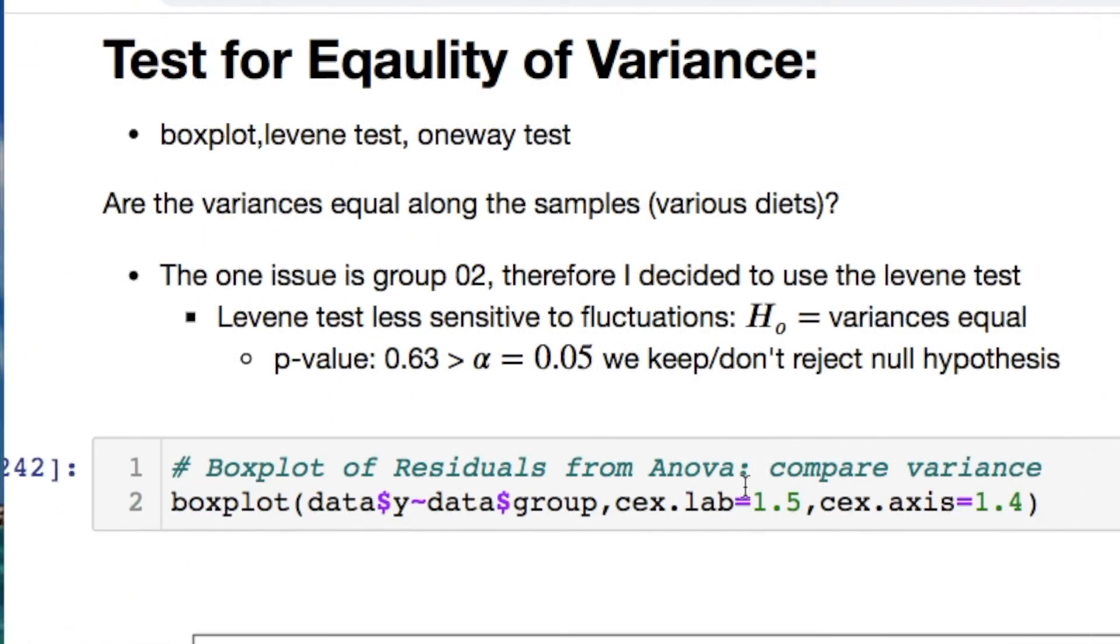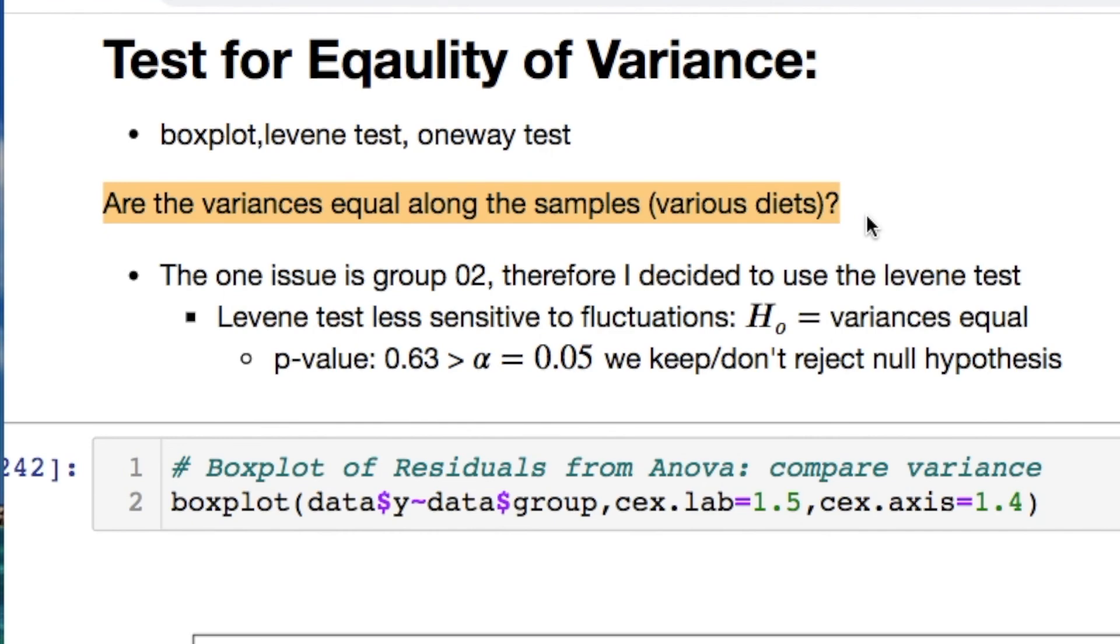Test for equality of variance. You can use a one-way test, the Levene test, and box plot. I will show all of those. Are the variances equal along the samples? For instance the various diets. The one issue here you're going to see is group two. Therefore I decided to do the Levene test for a quantitative approach. So we can get a good depiction. That is dealing with the hypothesis testing as well.